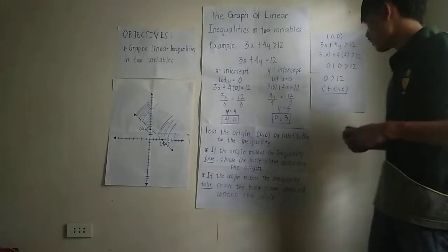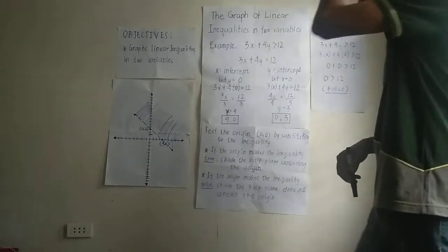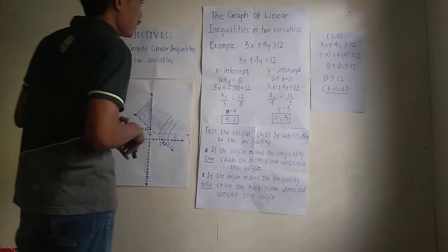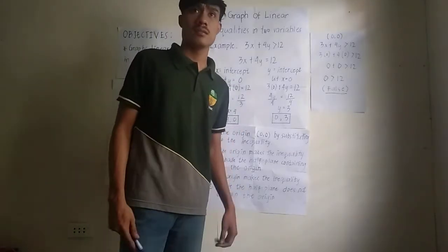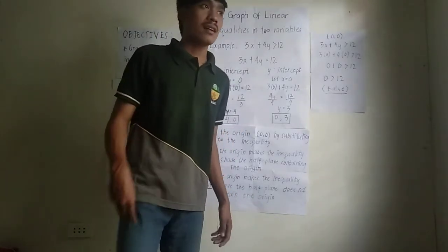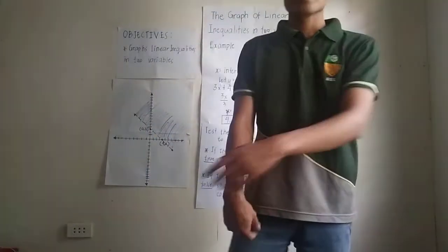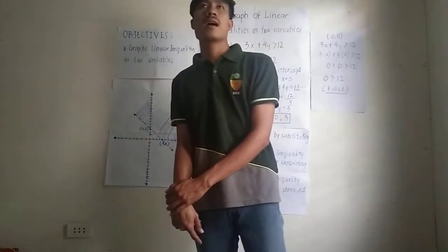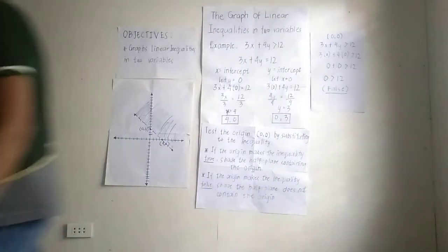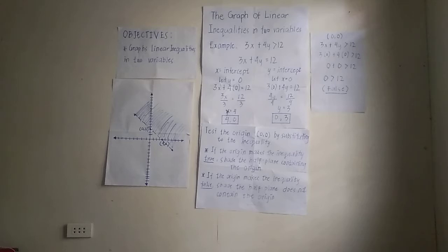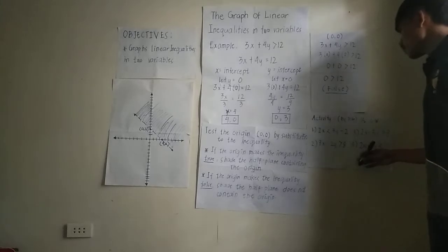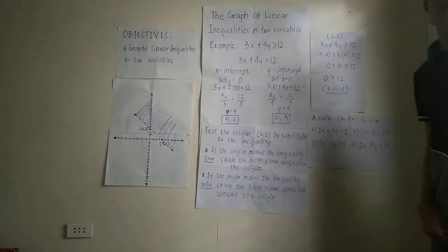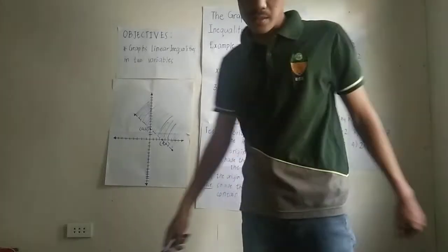Are you with me? Very good. That is the complete process for graphing linear inequalities in two variables. Since there are no more questions, let's have an activity by pair. Please answer these 4 problems in one half sheet of paper, crosswise — graph the linear inequalities in two variables. Answer your activity in 20 minutes. Please start now.